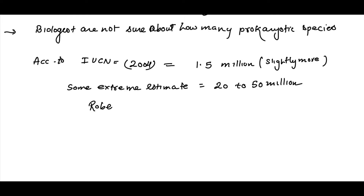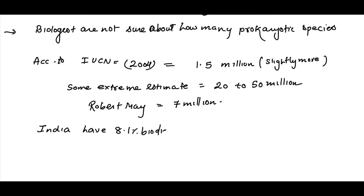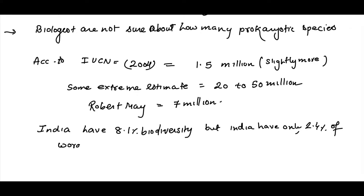There is a scientist known as Robert May who believed and stated that there will be somewhere around 7 million species present. These are the different estimates given in NCERT. It is also believed that India has 8.1% of the world's biodiversity, yet India occupies only 2.4% of the world's land area.